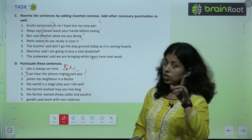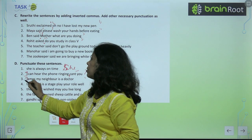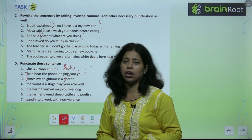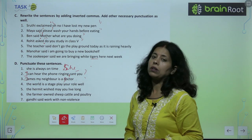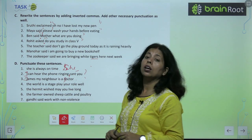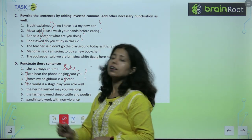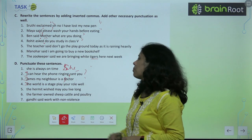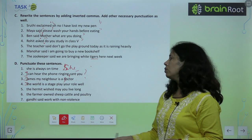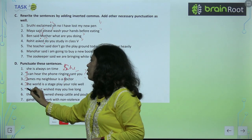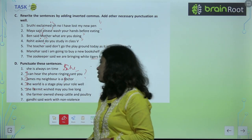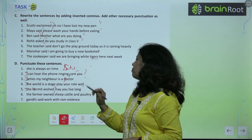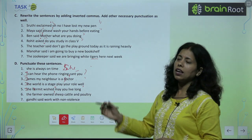'james my neighbor is a doctor' — J is a proper noun, so it gets a capital letter: 'James, my neighbor, is a doctor.' Full stop at the end. 'the word is a stage' — starts with capital T: 'The world is a stage, play your role.' The name Hermate — H is capital. 'Wish, may you live long.' Full stop at the end.